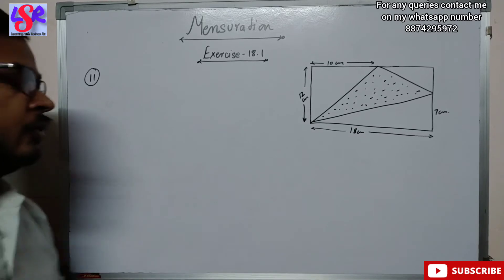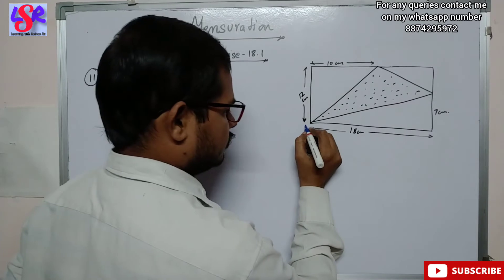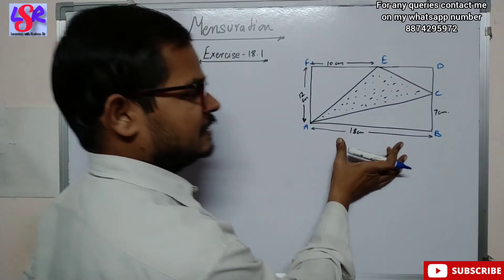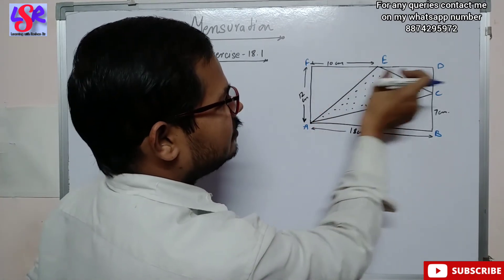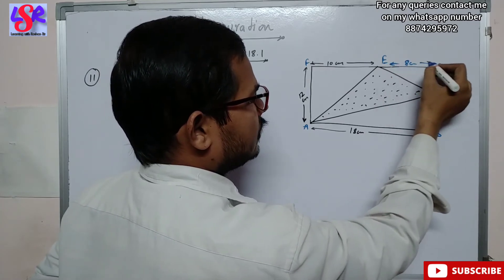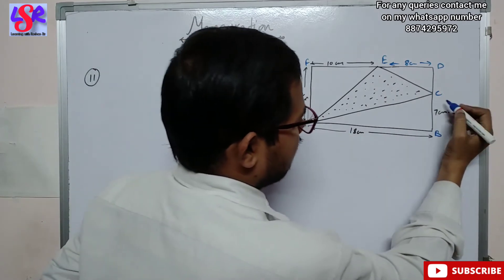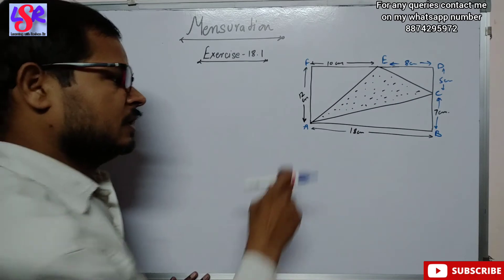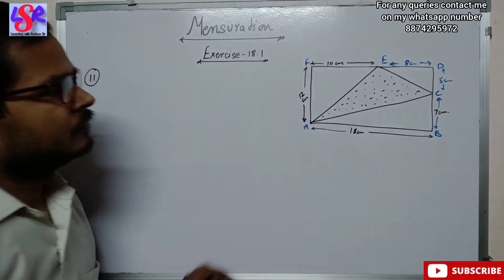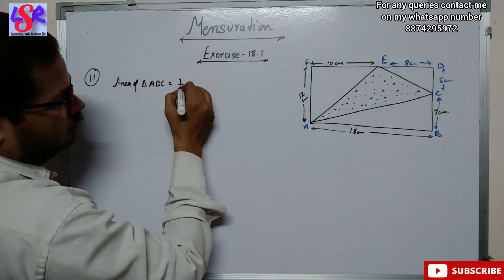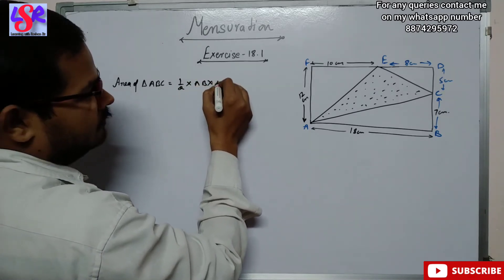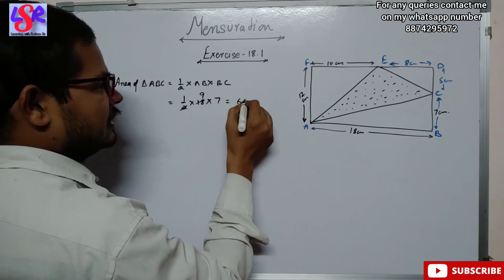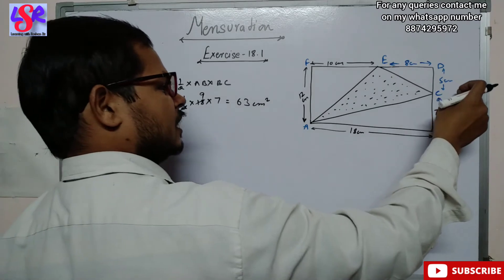Now let's move to question number 11. We have to find the area of the shaded region in this figure. We name the vertices A, B, C, D, E, and F. The total length is 18 centimeter and a dimension of 12 centimeter is given. Working through the rectangle ABDF, the area of rectangle ABDF comes out and one triangle region gives 63 centimeter square.